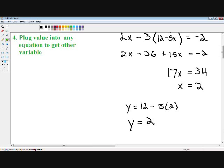Now we have solved our system of equations. You always write your final answer as a coordinate, so our x equals 2 and our y equals 2. Here's our final answer: (2, 2).